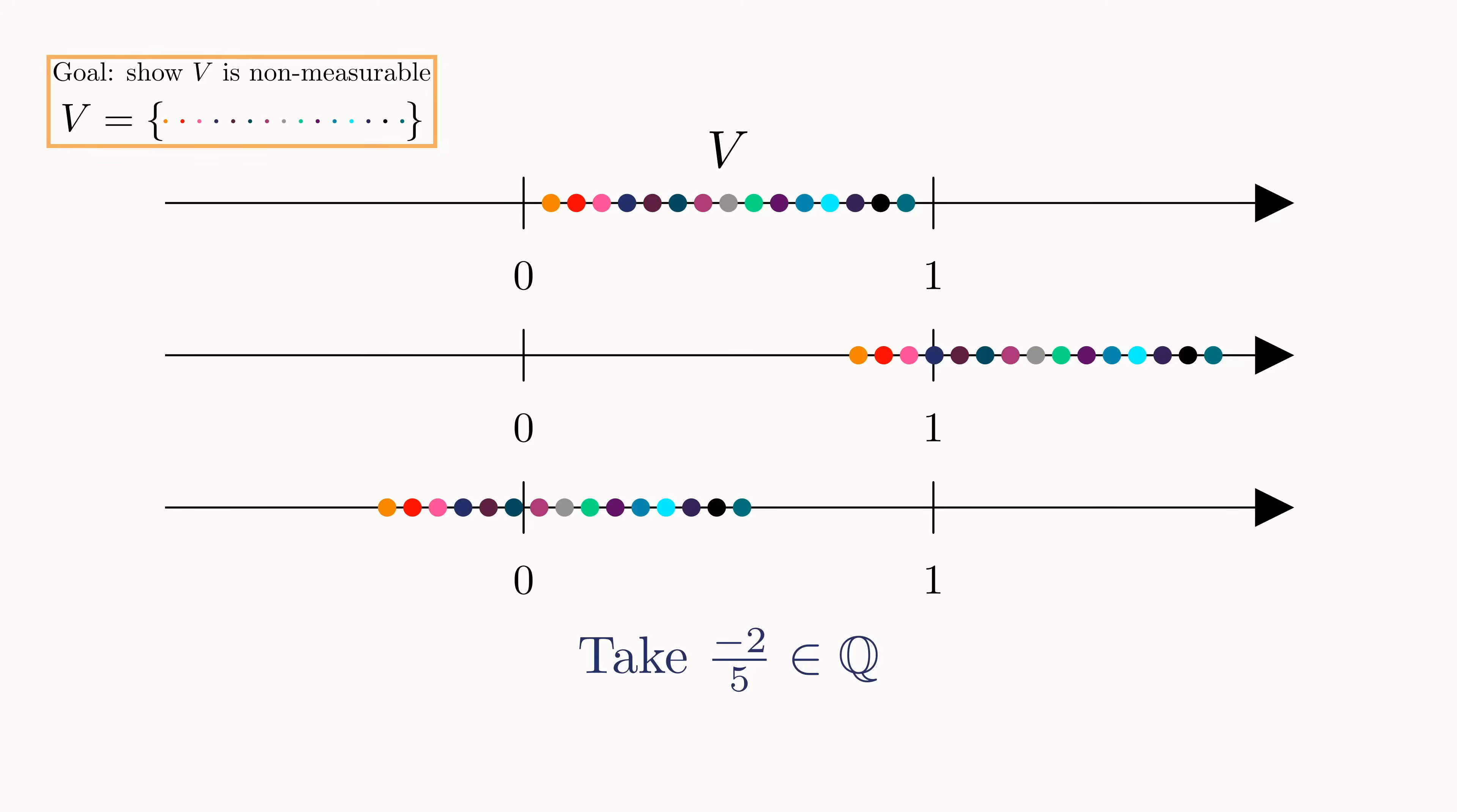Our goal is to do this with all the rational numbers between minus 1 and 1. And since the rational numbers are countably infinite, we can make a list that enumerates all of them. We can then use this list to make an infinite number of copies of V, by just shifting V with each one of these rationals. Let's call V plus Q1 V1, V plus Q2 V2, and so on.